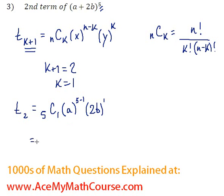Alright, so for the second term, what is 5C1? That's going to be 5 factorial over 1 factorial times (5 - 1) factorial.